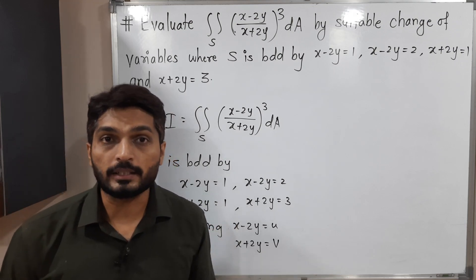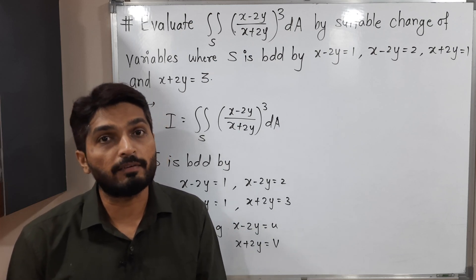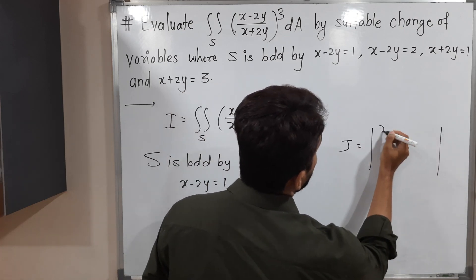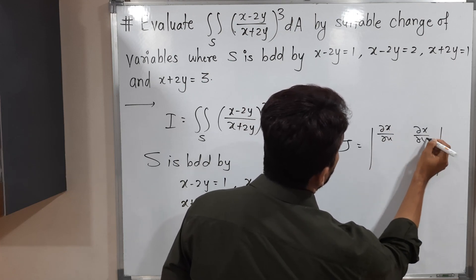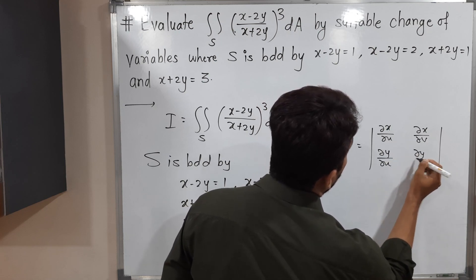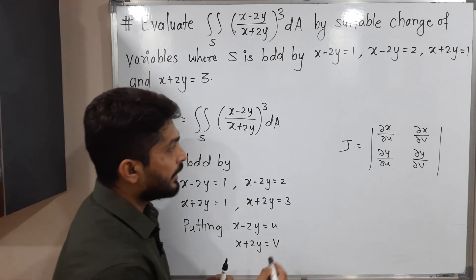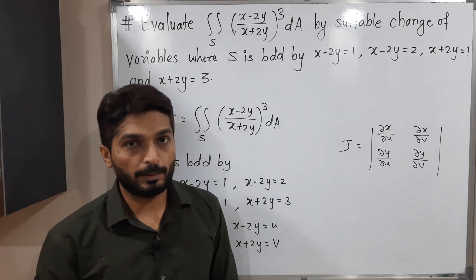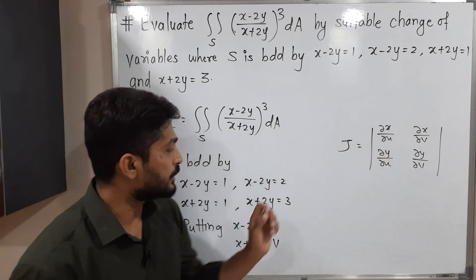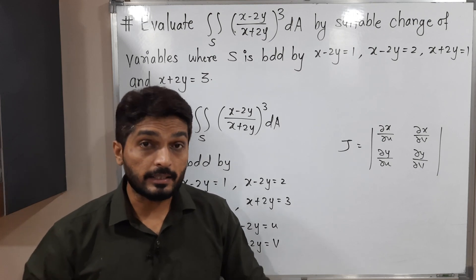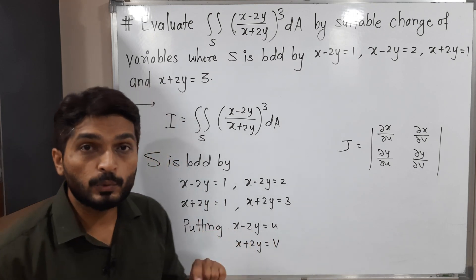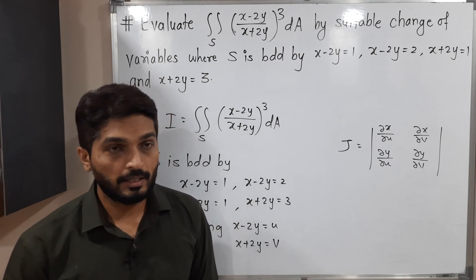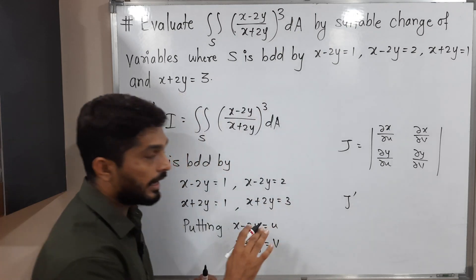In the case of double integration, when we change variables, it's necessary to find the Jacobian. The Jacobian J is a determinant: ∂x/∂u, ∂x/∂v, ∂y/∂u, ∂y/∂v. We need to find these four derivatives. However, since we haven't expressed x and y in terms of u and v yet, I'll use a shortcut: instead of finding J directly, I will find J' first.